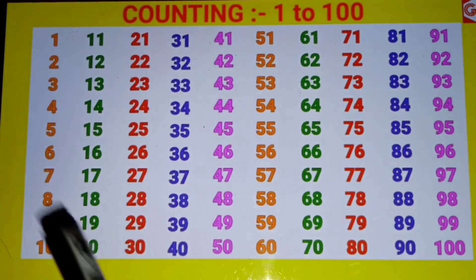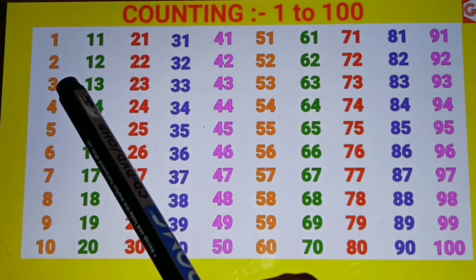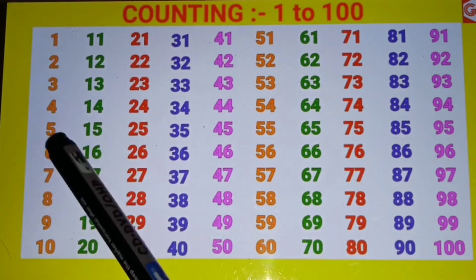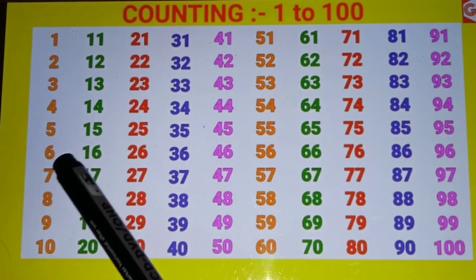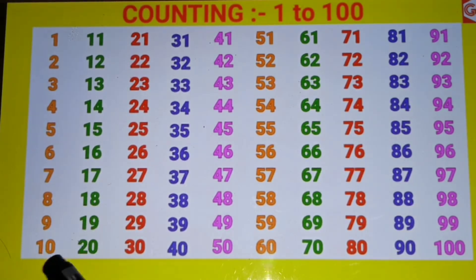1 to 100 counting in English. 1, 2, 3, 4, 5, 6, 7, 8, 9, 10.